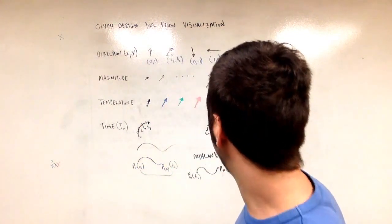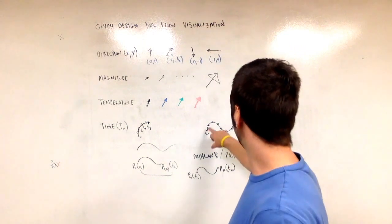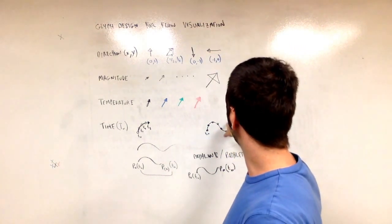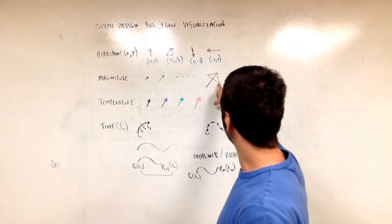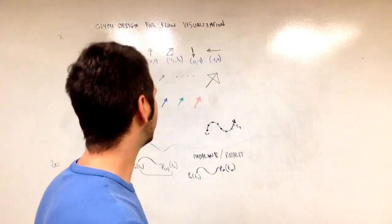Now to combine all of these things, I would have to change the curvature, the color, the length, and the direction. I can try to do that on the whiteboard, try to combine them all.